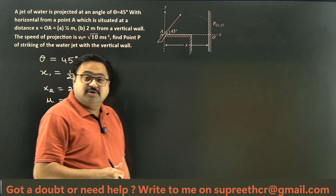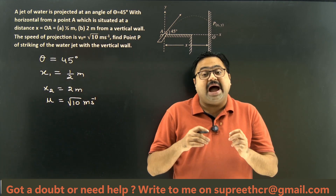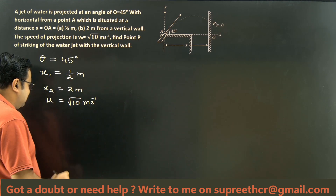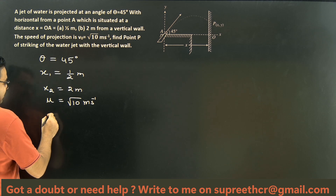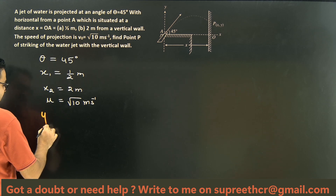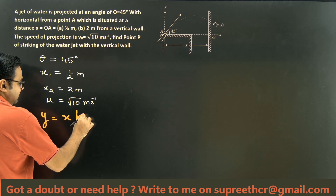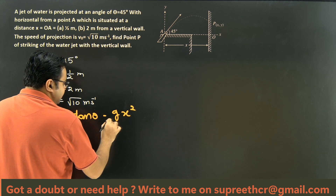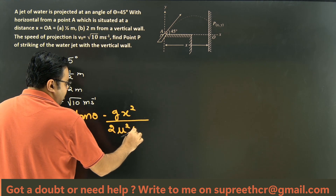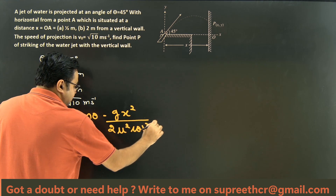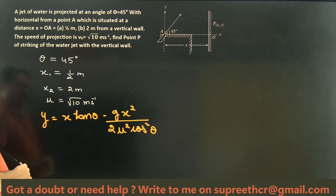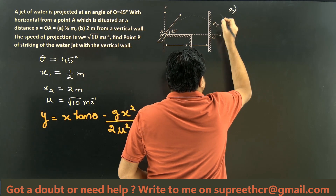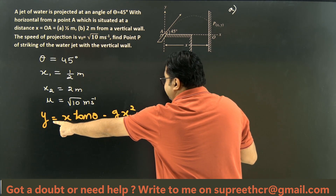In one of my previous videos, I talked about how to derive the equation of trajectory of a projectile, and we will use that here. The equation of trajectory of a projectile says that Y equals X·tan(θ) minus G·X² divided by 2·U²·cos²(θ). That is the equation of trajectory. For part A of the question, we will use this same equation. Let's find the Y coordinate.